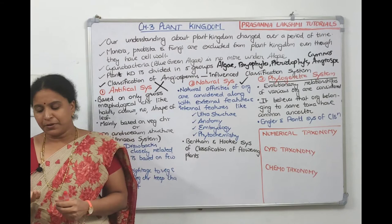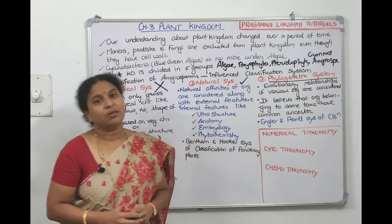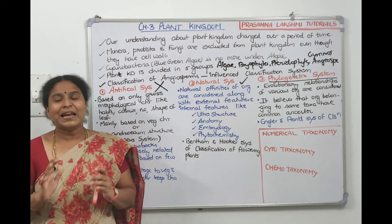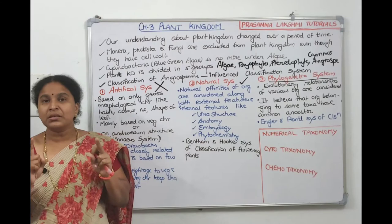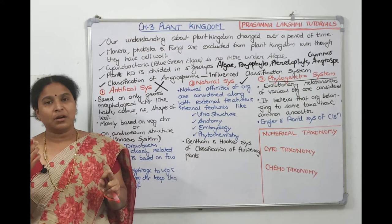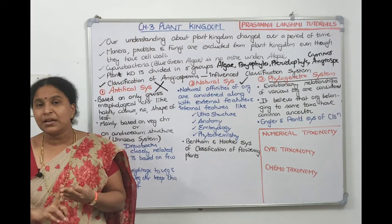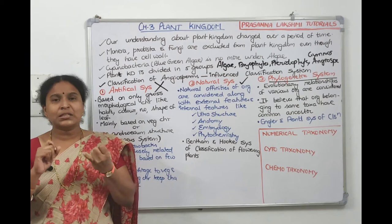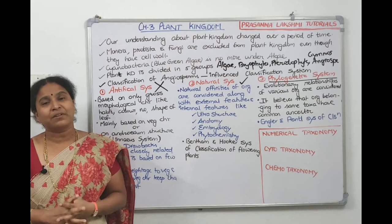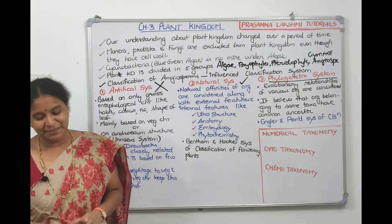Cytotaxonomy uses cytological information — chromosomal number, structure, and behavior — for classification. This has been asked in previous NEET papers. Chemotaxonomy takes chemical constituents of the cell into consideration — cell wall composition, cell membrane composition, nucleic acid composition, etc.